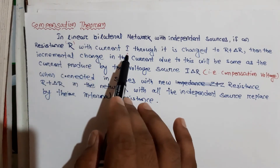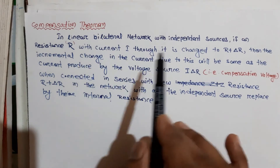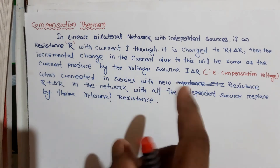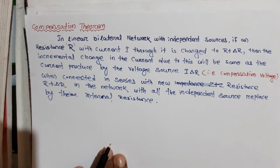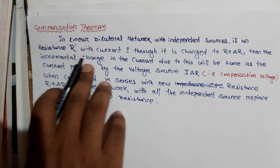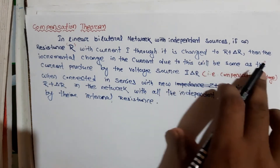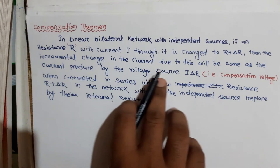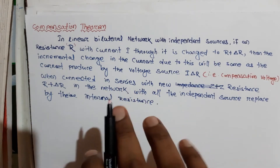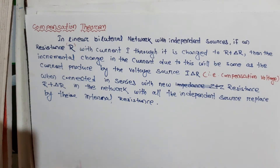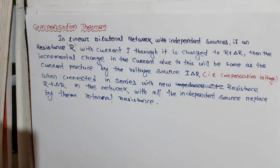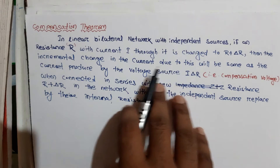if a resistance R carries a current I in a linear bilateral network, and the resistance value is changed from R to R plus delta-R, then the incremental change in the current due to this change will be the same as the current produced by a voltage source equal to I times delta-R.